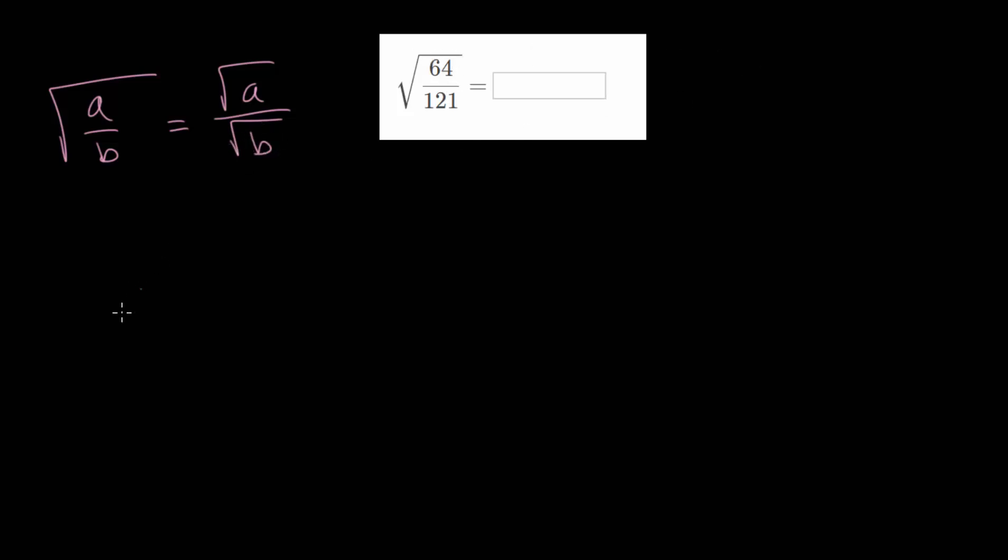So when we have this square root of 64 over 121, we're asking ourselves what number multiplied by itself gives you 64 over 121. And the process is to just take the square root of our numerator and divide it by the square root of our denominator.